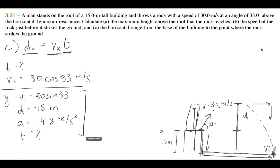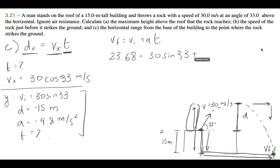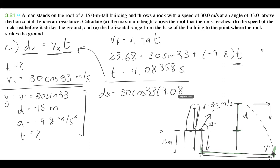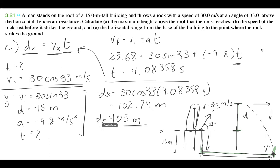Using the kinematic equation VF equals VI plus AT: 23.68 equals 30 sin 33 plus negative 9.8 times T. Solving for time, I get T equal to 4.08358 seconds. Plugging that back into DX equals VX times T gives us 102.74 meters, which we round to 103 meters. So that's how far horizontally the rock travels.